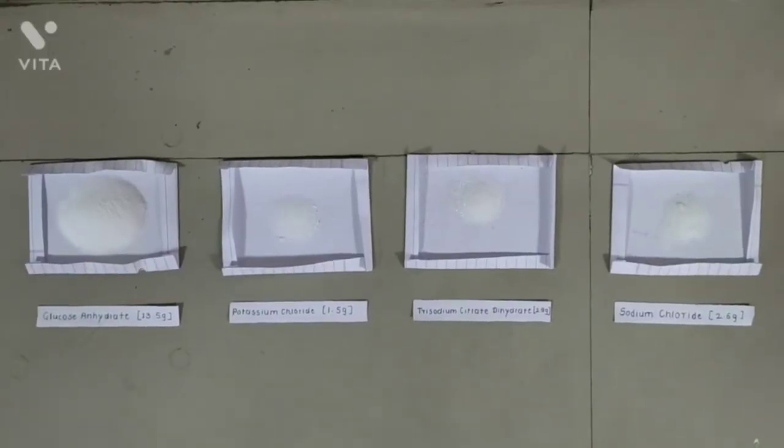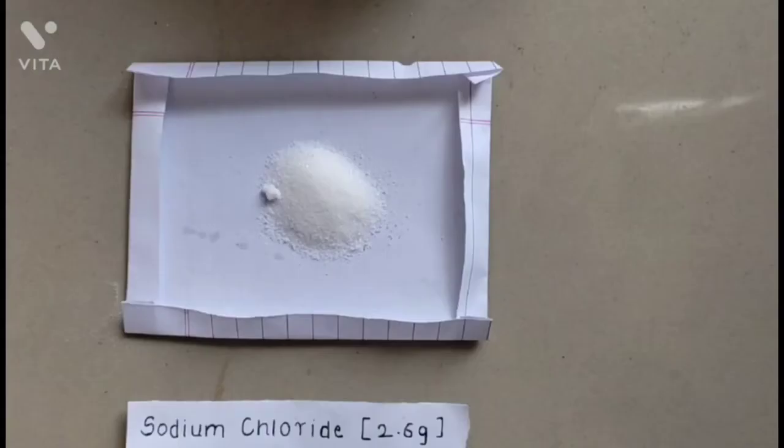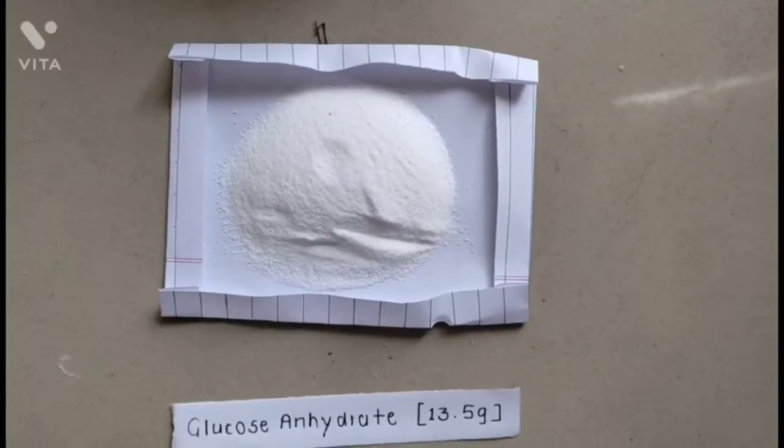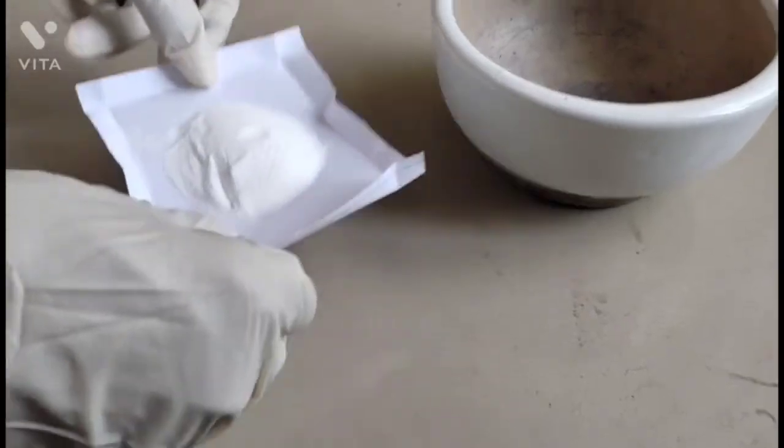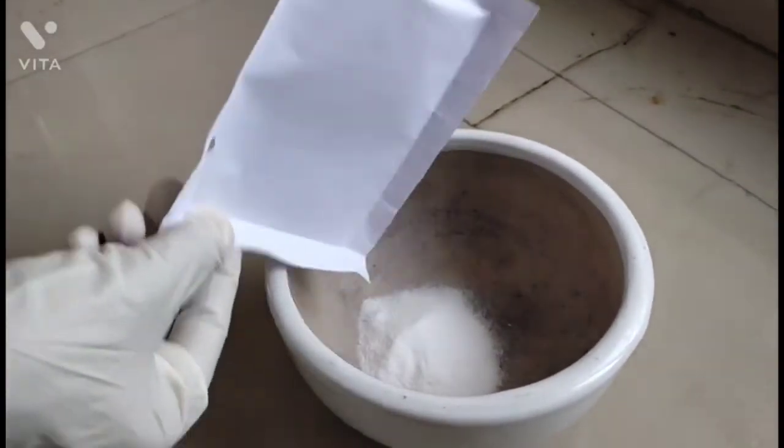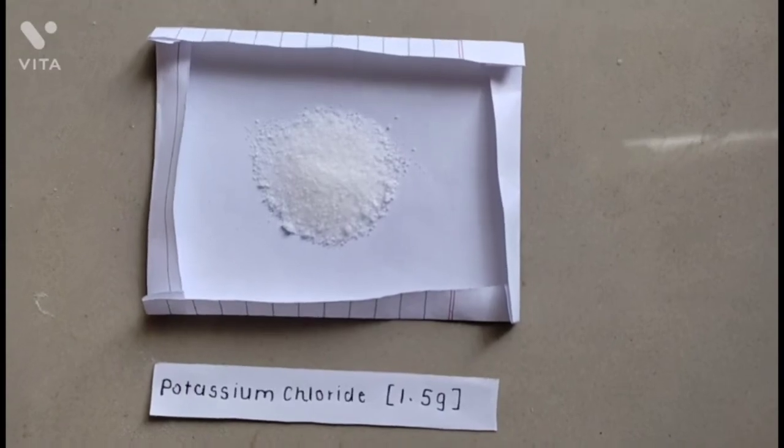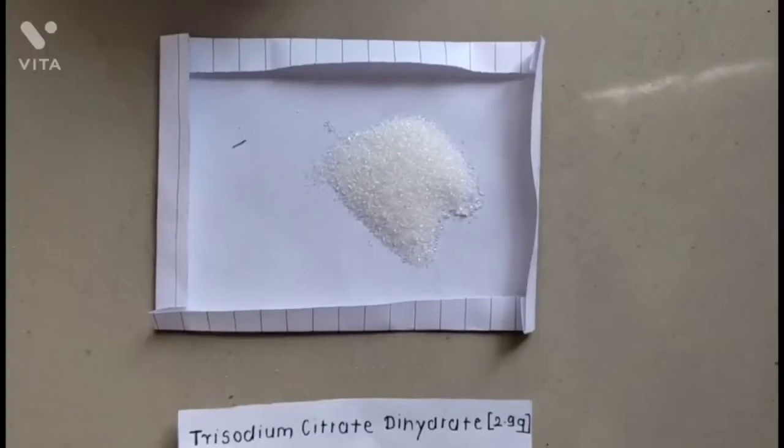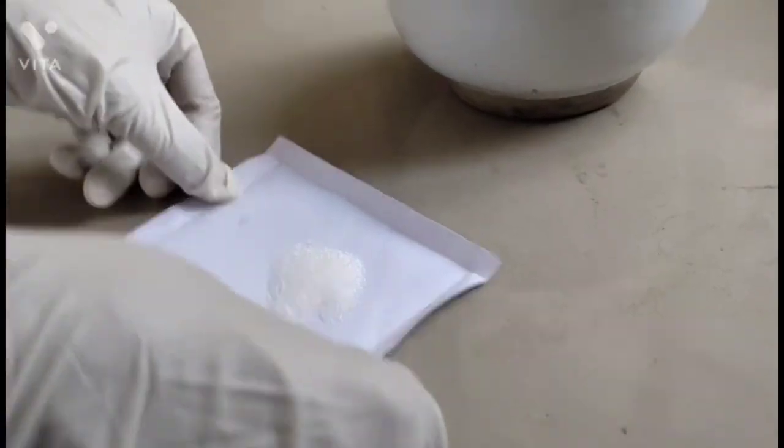Let's start preparation of ORS powder. First add 2.6 gram of sodium chloride. Next add 13.5 gram of glucose anhydrate. Then add 1.5 gram of potassium chloride. And lastly add 2.9 gram of trisodium citrate dihydrate.